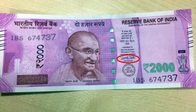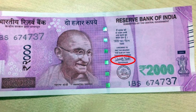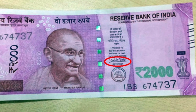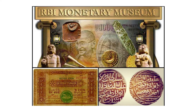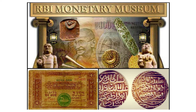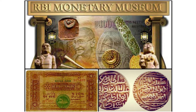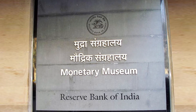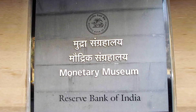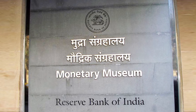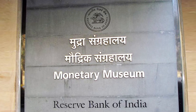The currency notes bear the signature of the governor of RBI. The central office of RBI was initially established in Calcutta but was permanently moved to Mumbai in 1937. RBI runs a monetary museum in the premises of this head office.